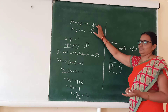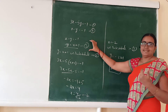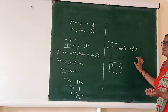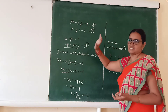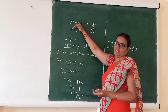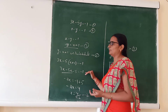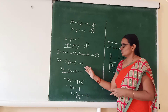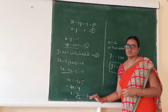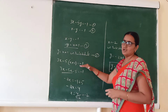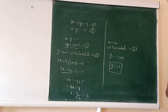When given two equations, we isolate x or y from one equation — for example, we make y the subject from equation 2. We substitute that y value into the first equation to find the x value, and then substitute x back to find y. This is the substitution method.